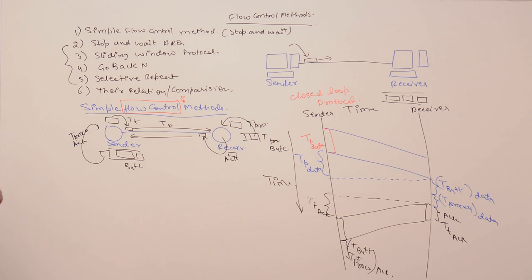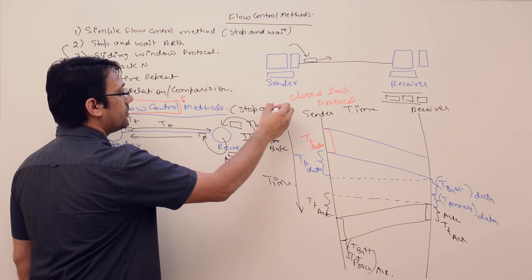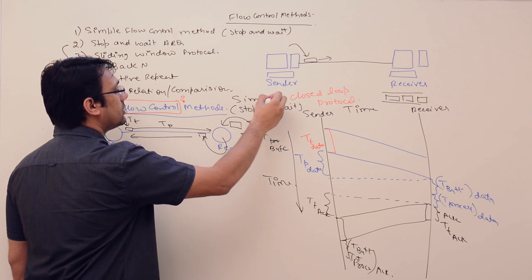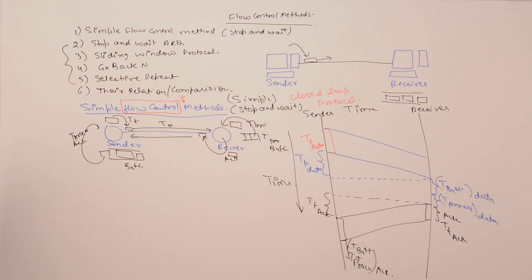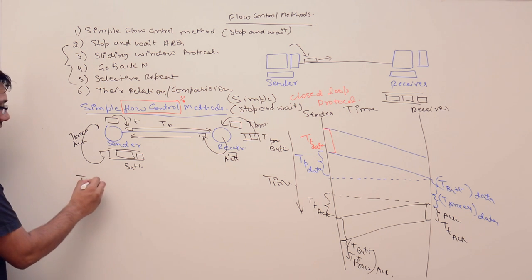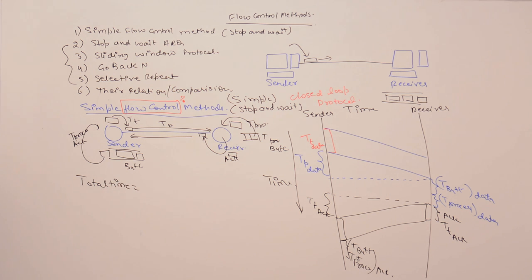This complete process is called the simple flow control method, also called stop and wait or simple stop and wait. The sender sends the data, then stops and waits for the acknowledgement. As soon as the acknowledgement is received, it sends the next data packet. So what is the total time to send one data packet?